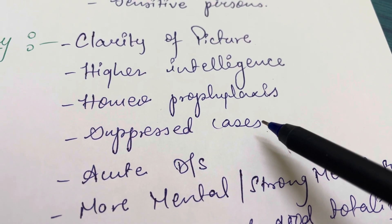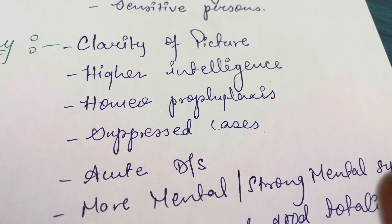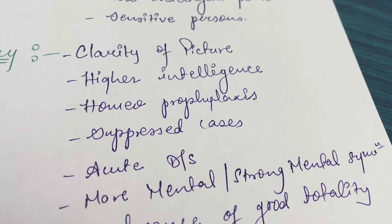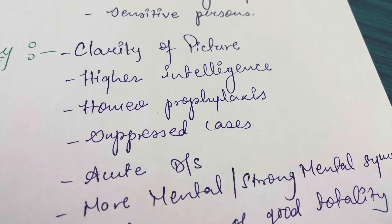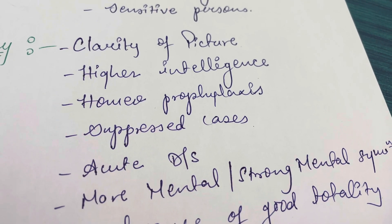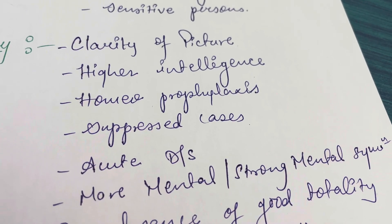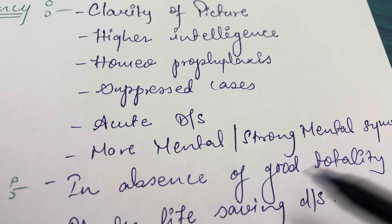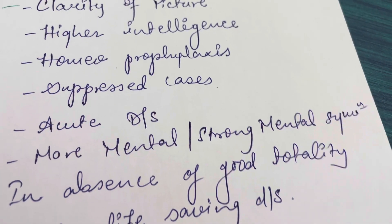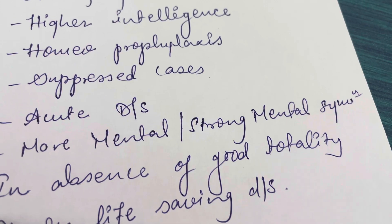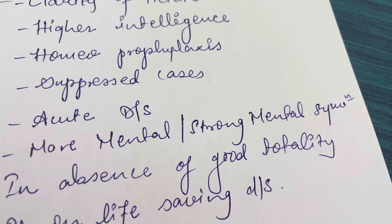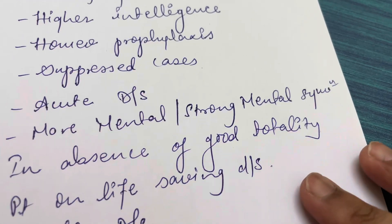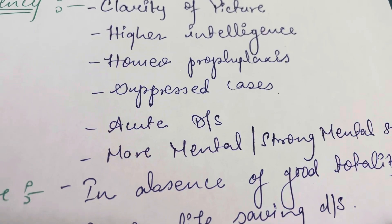Suppressed cases — if a case has been suppressed due to a lot of medicines, to bring out its power, you need to give a higher dose, which is why we give higher potency. In acute diseases, we give higher potency with repetition so that the case is covered up quickly. If we give low potency in acute cases it will not work fast enough.